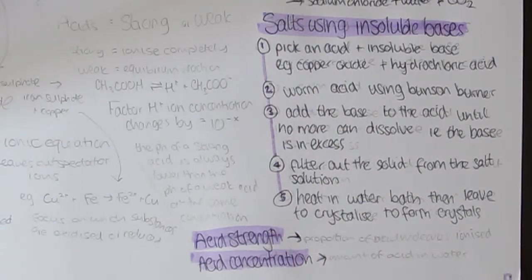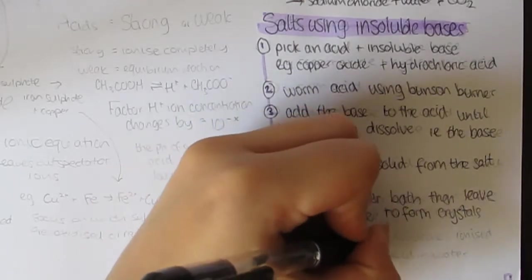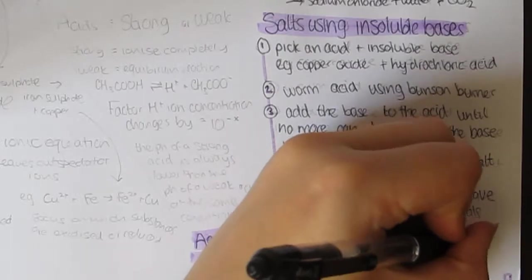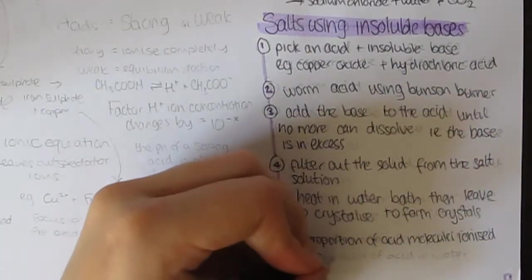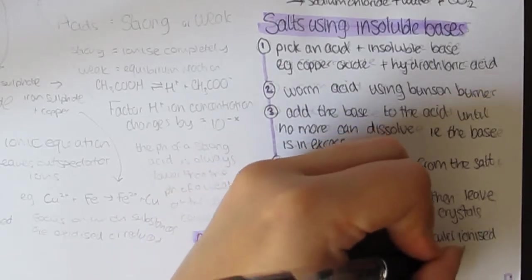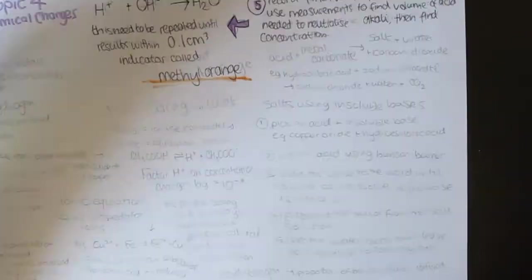Acid plus base makes salt plus water. As well as alkali bases, bases can also be metal oxides and metal hydroxides. The combination of metal and acid decides the salt that is made in the chemical reaction. For example, hydrochloric acid plus copper oxide makes copper chloride plus water.